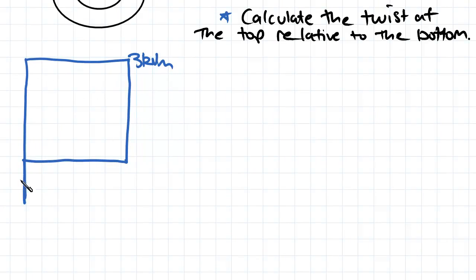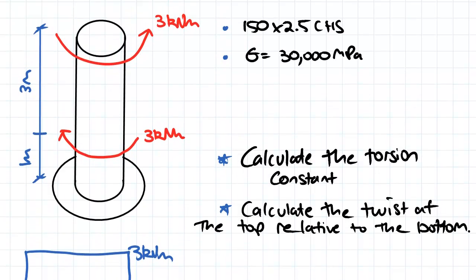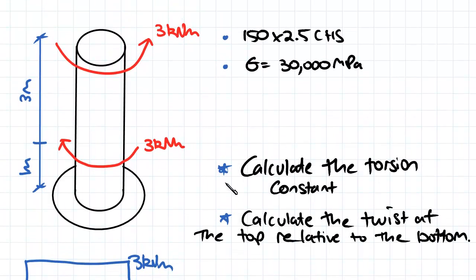And the last one meter we've got zero kilonewton meters. So in this question we've been asked to calculate the torsion constant and to calculate the twist at the top relative to the bottom.